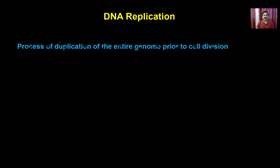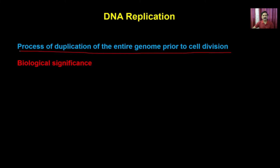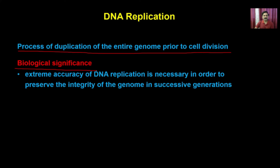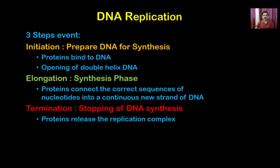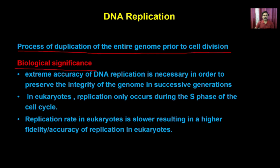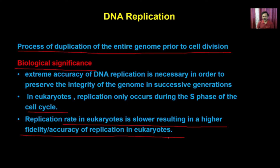DNA replication is the process of duplication of the entire genome prior to cell division. It has biological significance because it is extremely accurate. In eukaryotes, replication occurs only during the S phase of the cell cycle, and the replication rate is slower, resulting in higher fidelity or accuracy of replication.